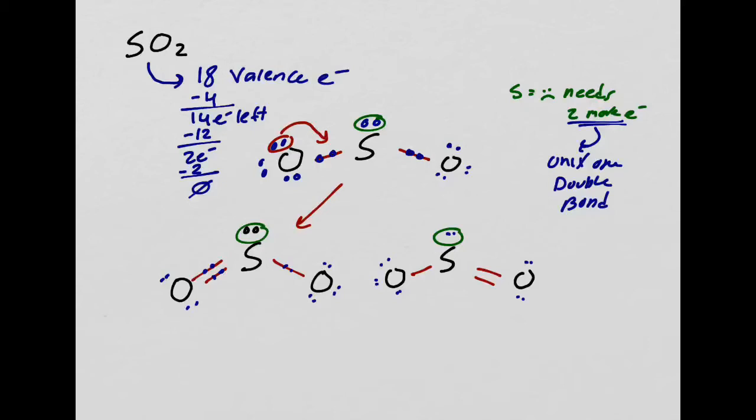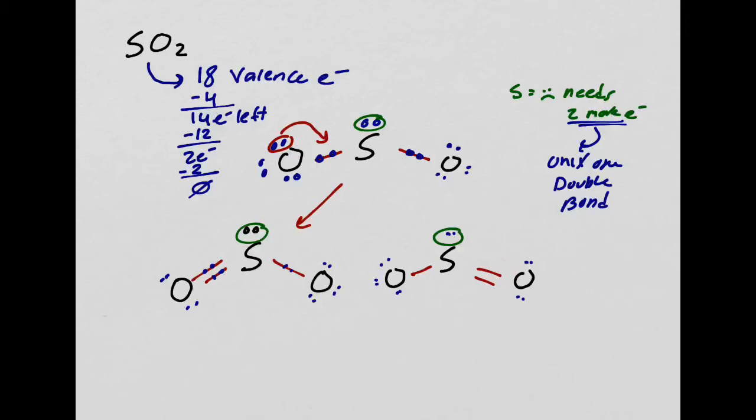Actually, let's do the practice problems right now. The next one is BH3. Wait — what is the geometry of SO2? I have a center atom, two bonds around it, and a lone pair. The double bond and triple bond don't really change the shape. Looking at the geometry sheet: center atom, two bonds, one lone pair — that is bent. SO2 is bent.